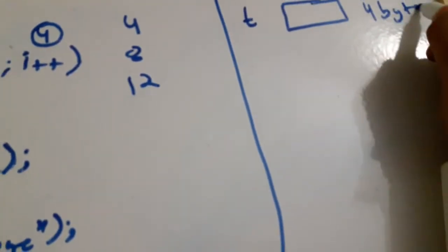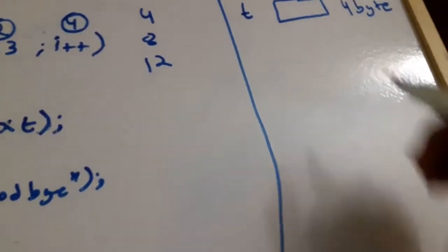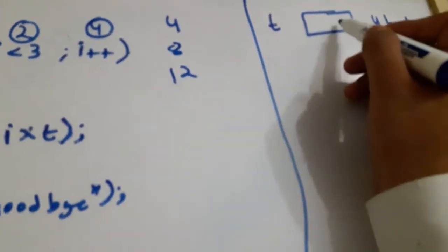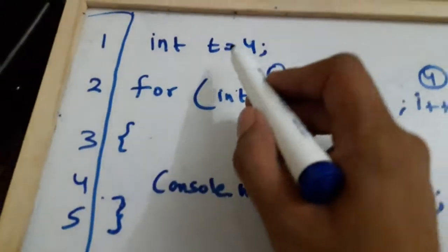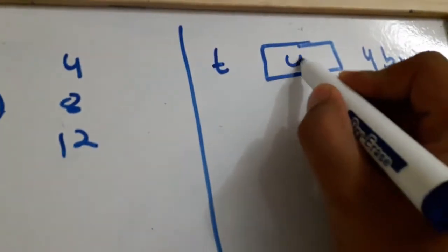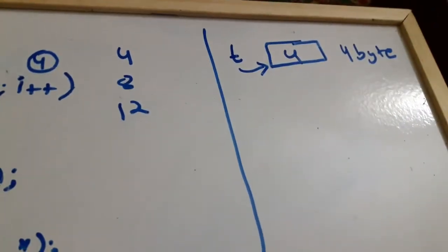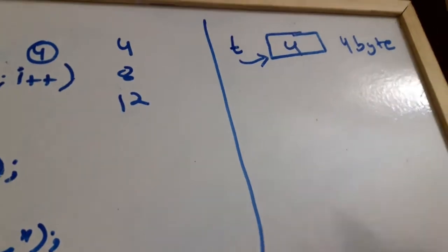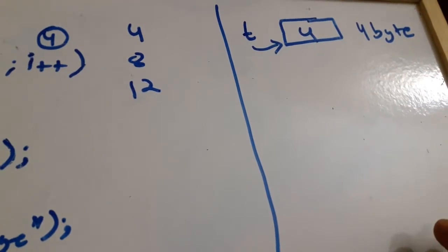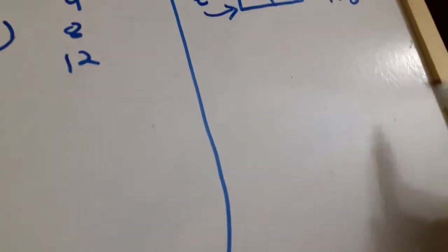The first thing the computer does during program execution is assign one block of four bytes. It will initially have random data, but once this line is executed, it will write four into that location. This location will be called t, so whenever we want to reference it we use t, and it refers to the value four stored inside that variable.